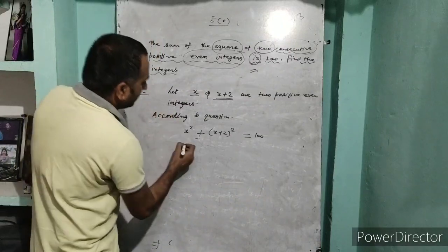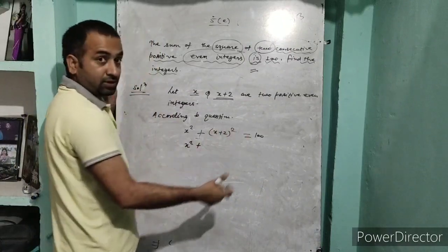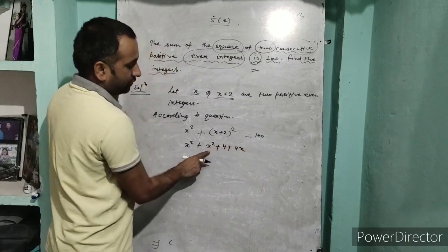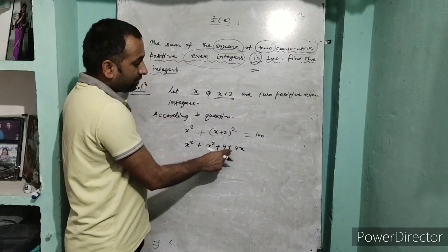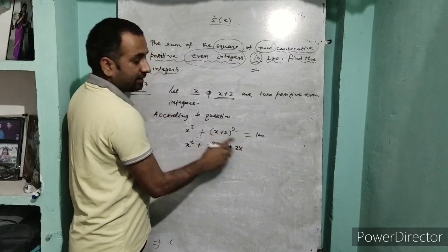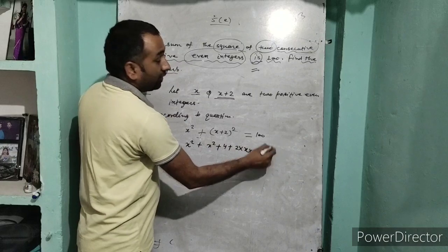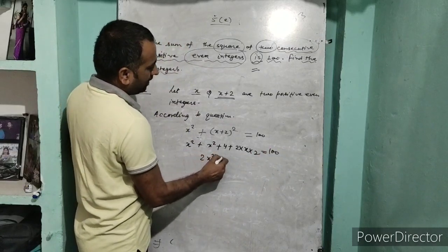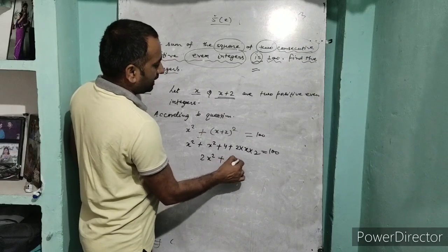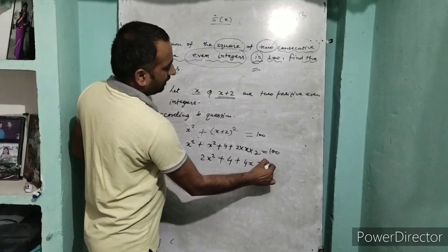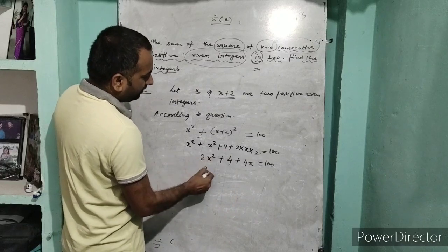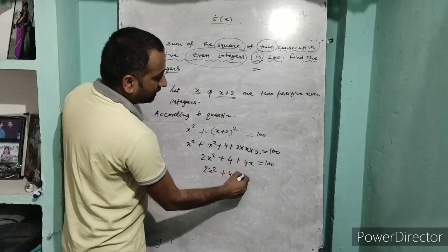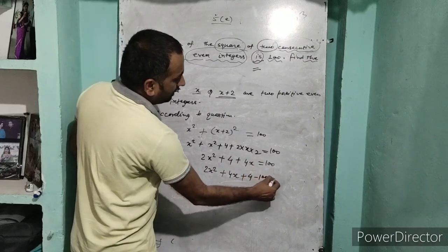We apply the identity (a+b)² = a² + 2ab + b². Here a = x and b = 2. So (x+2)² = x² + 4x + 4. Therefore the equation becomes: x² + x² + 4x + 4 = 100, which gives 2x² + 4x + 4 = 100. Now we transpose 100 to the left side: 2x² + 4x + 4 - 100 = 0, which gives 2x² + 4x - 96 = 0.